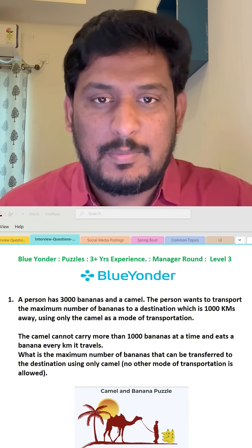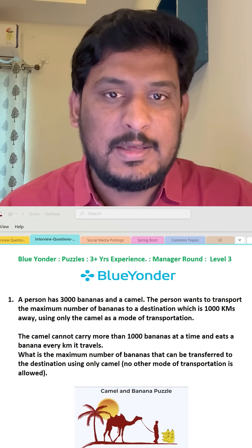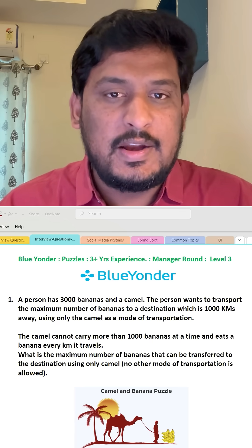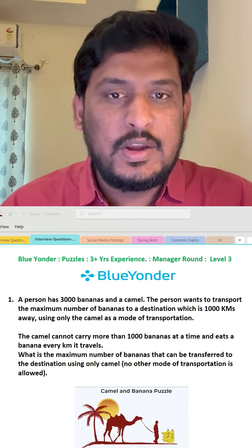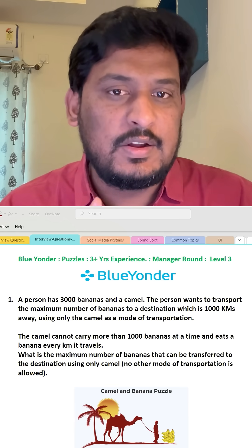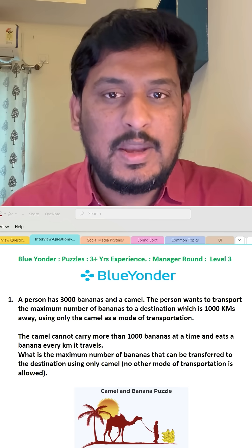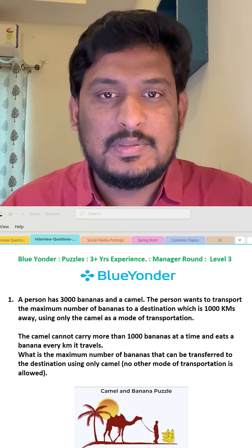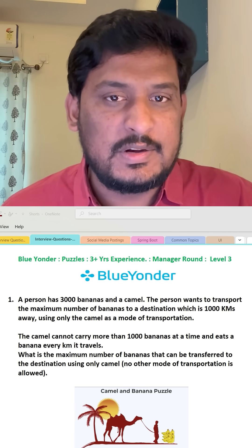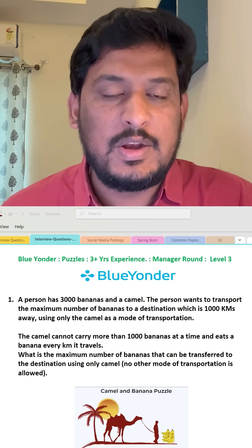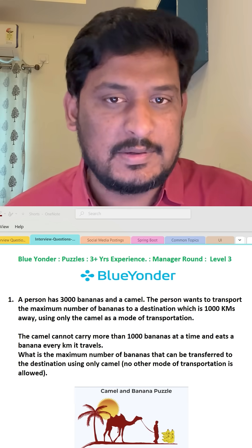There are a couple of constraints: The camel can carry only 1000 bananas at a time, and the camel eats one banana for every kilometer. So, how many bananas maximum can be transferred from source to destination? By reaching 1000 kilometers, how many bananas will be left at maximum?